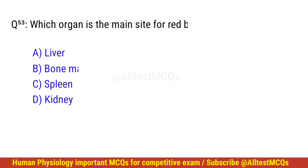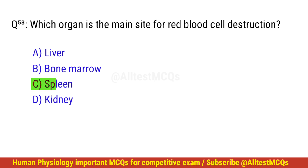Question number 54. Which organ is the main site for red blood cell destruction? The correct option is C: Spleen.